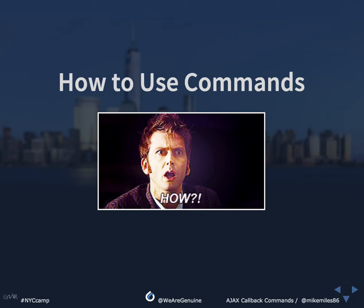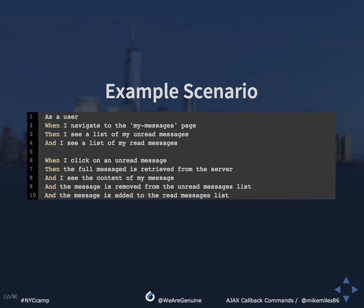So how do we use these Ajax callback commands and why would you want to use them? It's best to use an example scenario. As a user, when I navigate to the 'My Messages' page, I see a list of my unread messages and a list of my read messages. When I click on an unread message, the full message is retrieved from the server, I see the content of my message, the message is removed from the unread messages list, and the message is added to the read messages list.